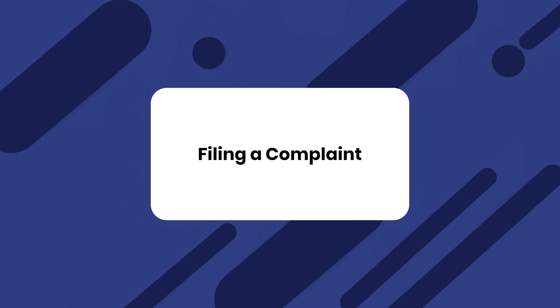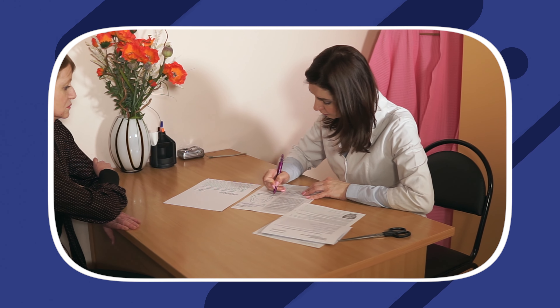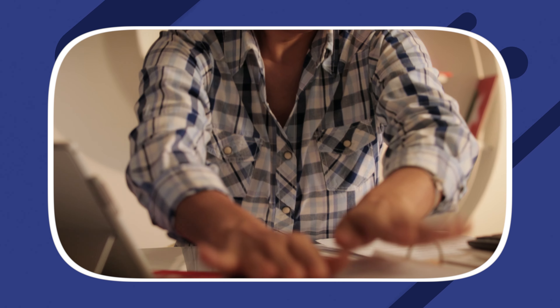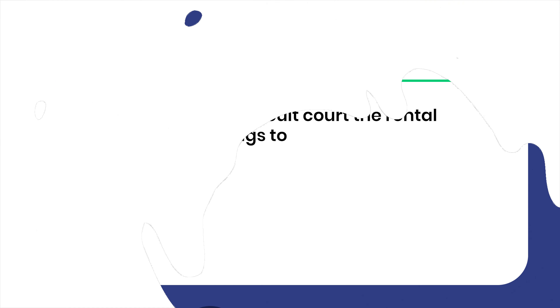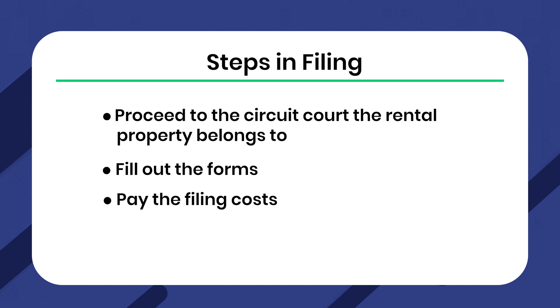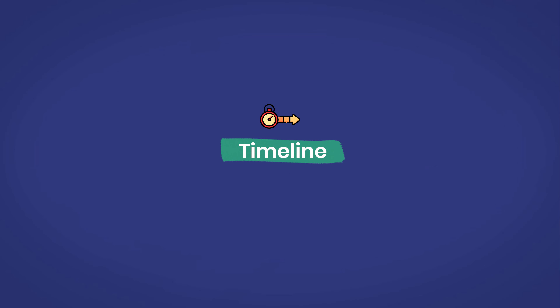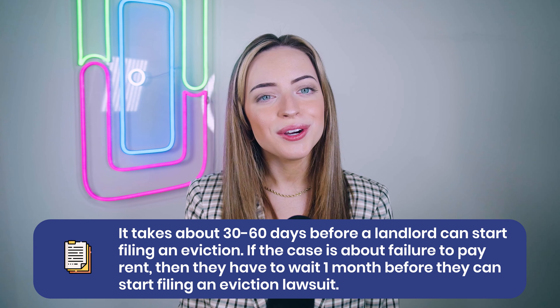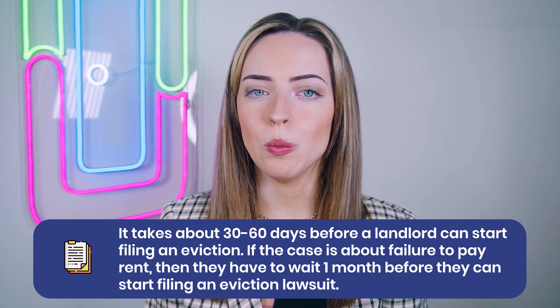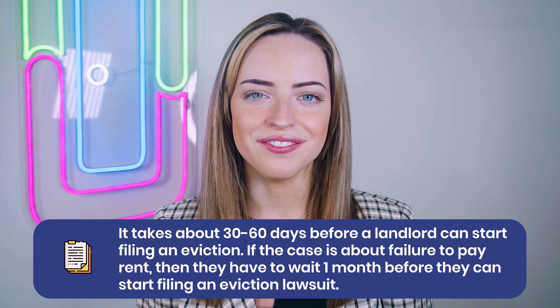The next step is filing a legal complaint in the correct circuit court based on the rental property's county. A landlord must file a complaint only after the notice period has passed. Successful evictions rely on accurate filings, so the landlord must file all forms correctly. To file, proceed to the circuit court the rental property belongs to, fill out the forms, and pay the filing cost. It takes about 30 to 60 days before a landlord can start filing an eviction. If the case is about failure to pay rent, they must wait one month before filing an eviction lawsuit.